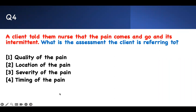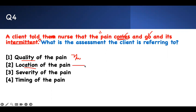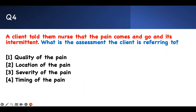Number four: a client told the nurse the pain comes and goes — it's intermittent. What assessment is the client referring to? Is it quality? No — quality would be sharp or dull. Location? No — that would be left or right. Severity? That's 10 out of 10. The quality describes sharp or dull. Timing is when the pain comes. If it comes and goes and is intermittent, that is the timing of the pain.